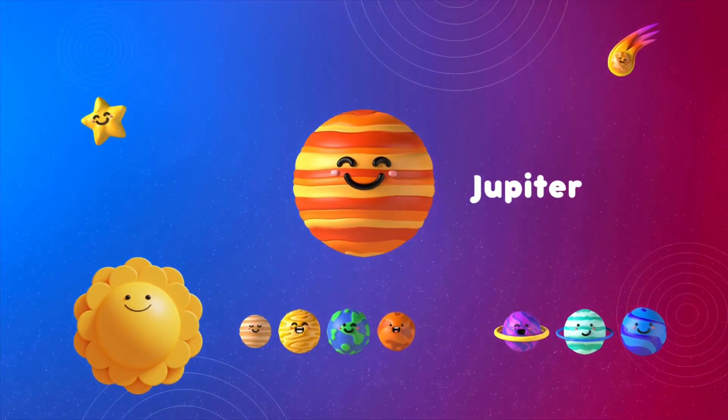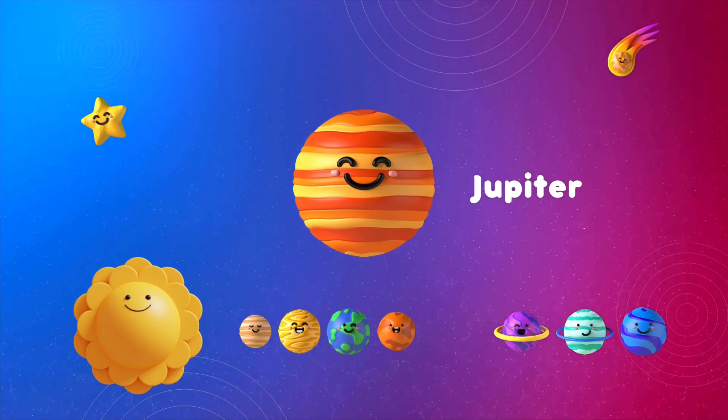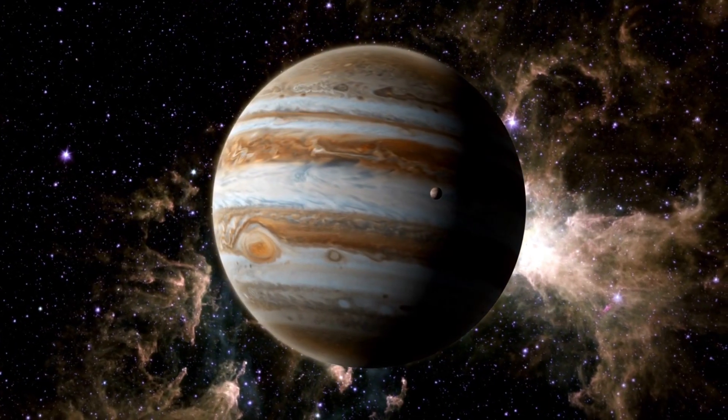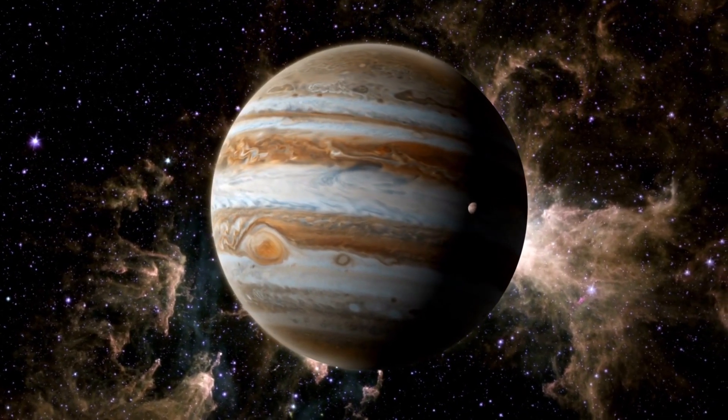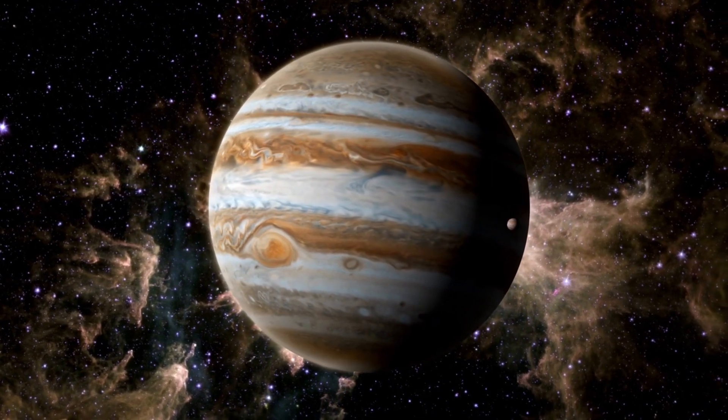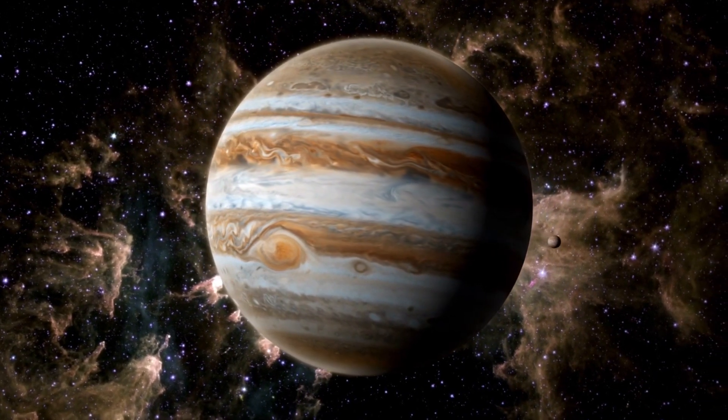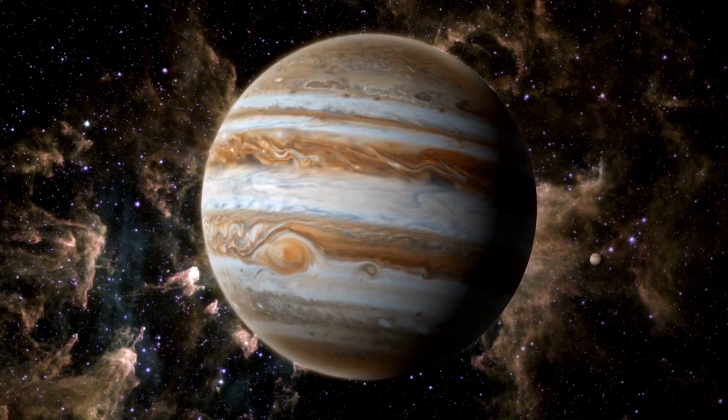This is Jupiter. Jupiter is like a giant party planet with colorful stripes. It's the biggest planet. Can you imagine dancing on Jupiter's clouds with your friends?